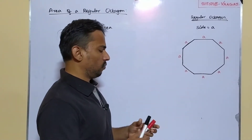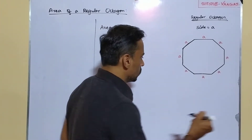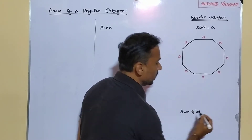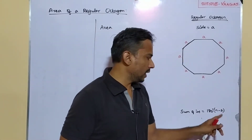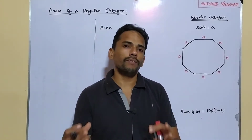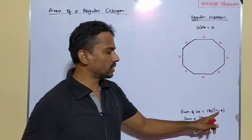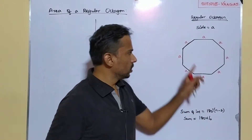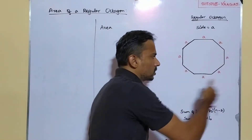For any polygon, the sum of interior angles is equal to 180 × (n − 2) degrees, where n is the number of sides. For an octagon, n = 8. So the sum of interior angles equals 180 × (8 − 2) = 180 × 6. But this is the sum of all 8 angles. Since all angles are equal, each angle equals 180 × 6 divided by 8.